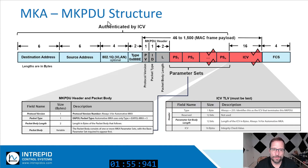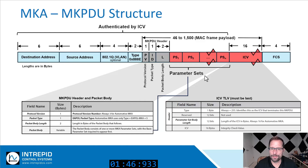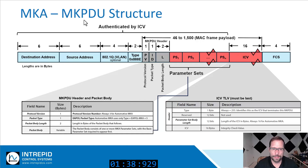MKPDUs are structured information exchanged between MKA participants. Each MKPDU starts with a header, followed by various parameter sets carrying different information, and is then followed by an integrity check value that authenticates the frame. These are sent in standard MAC frames.